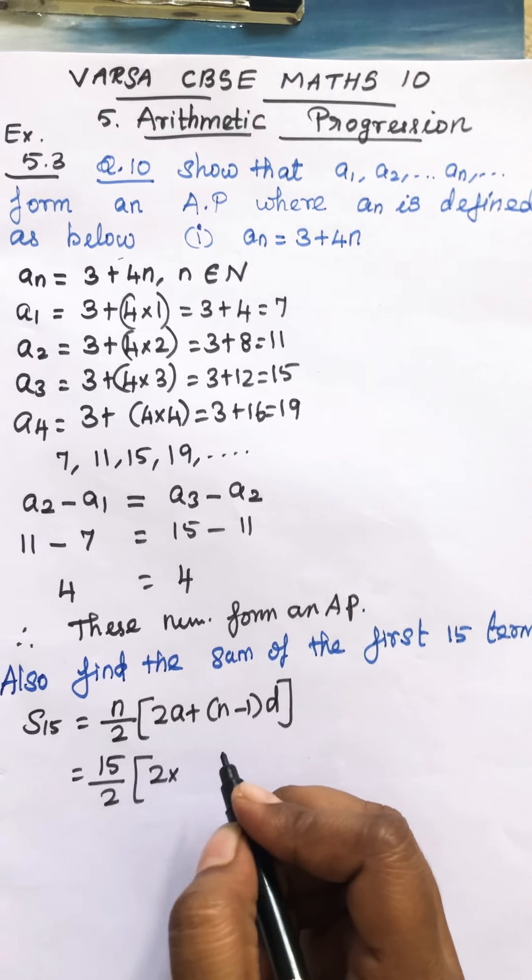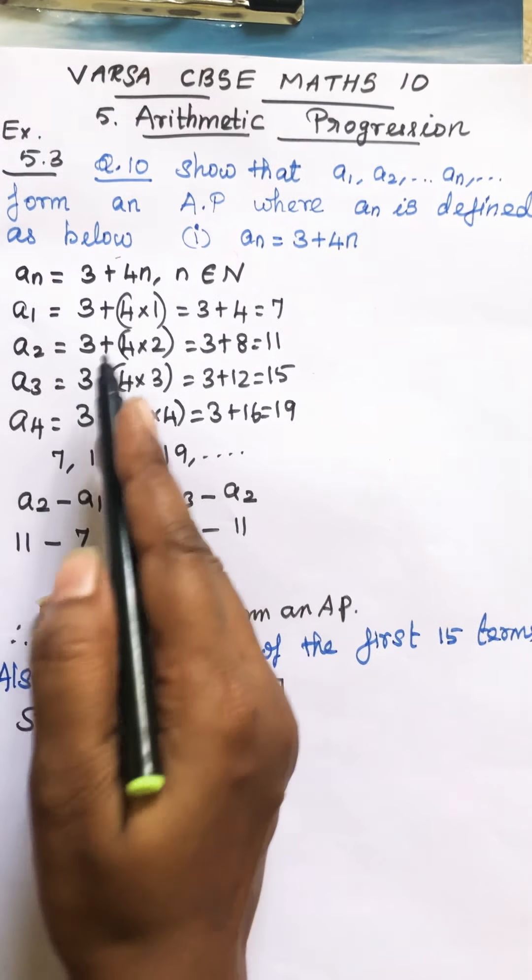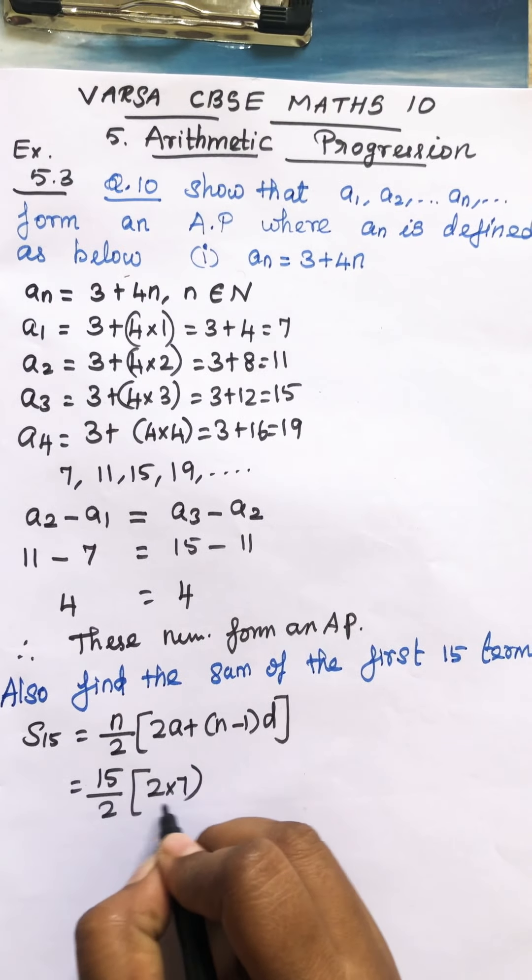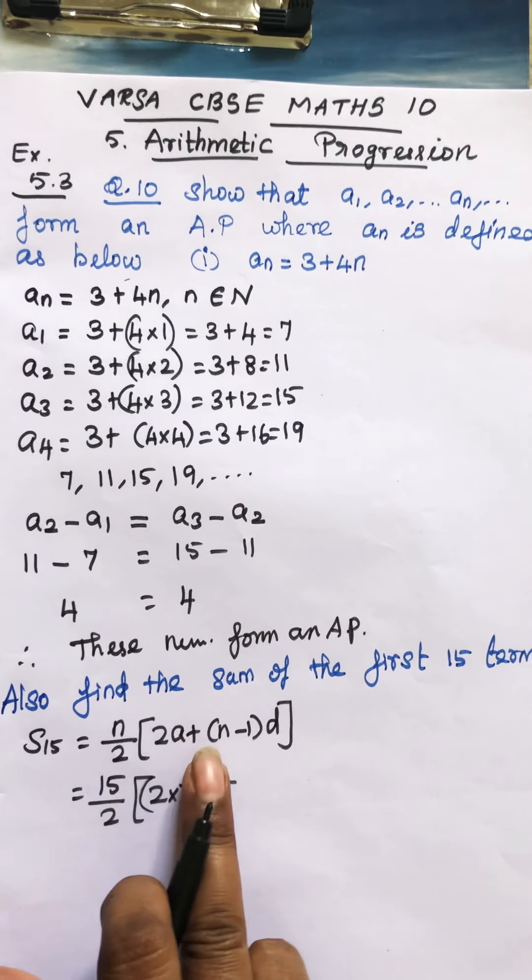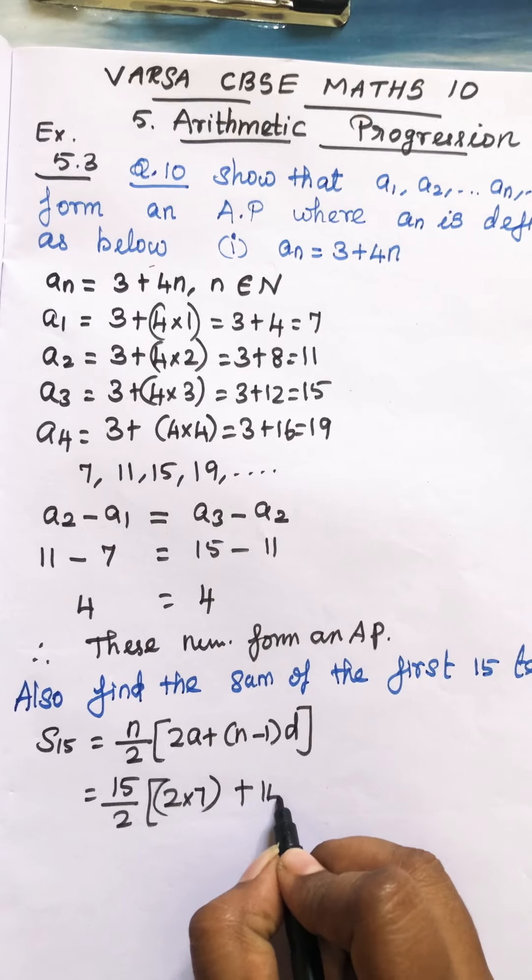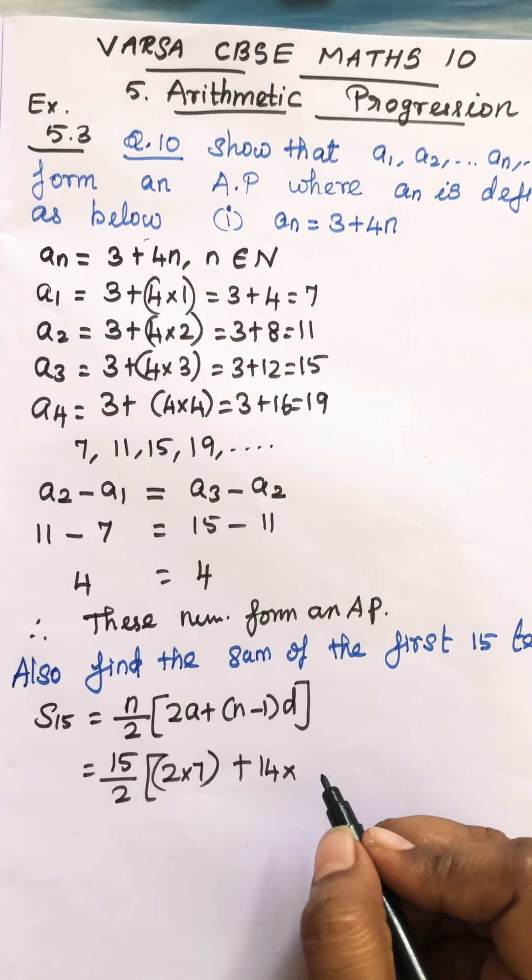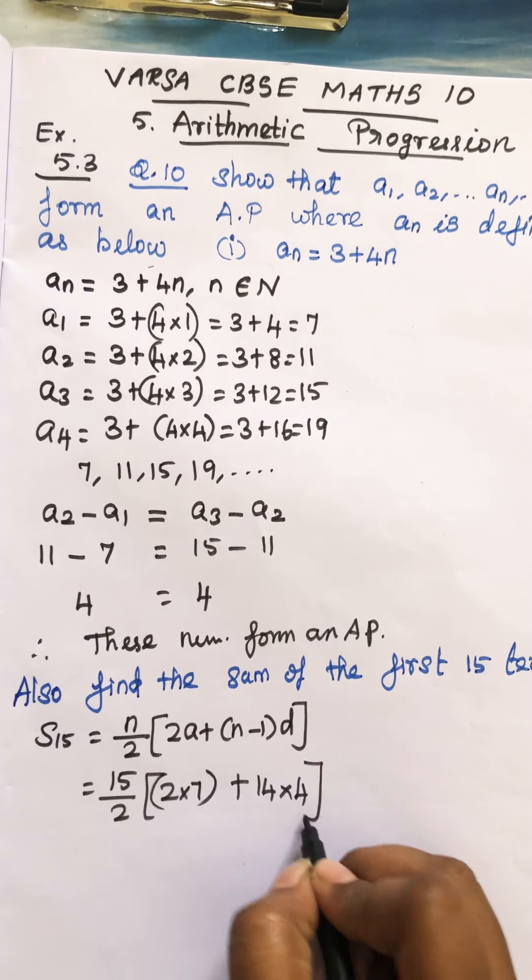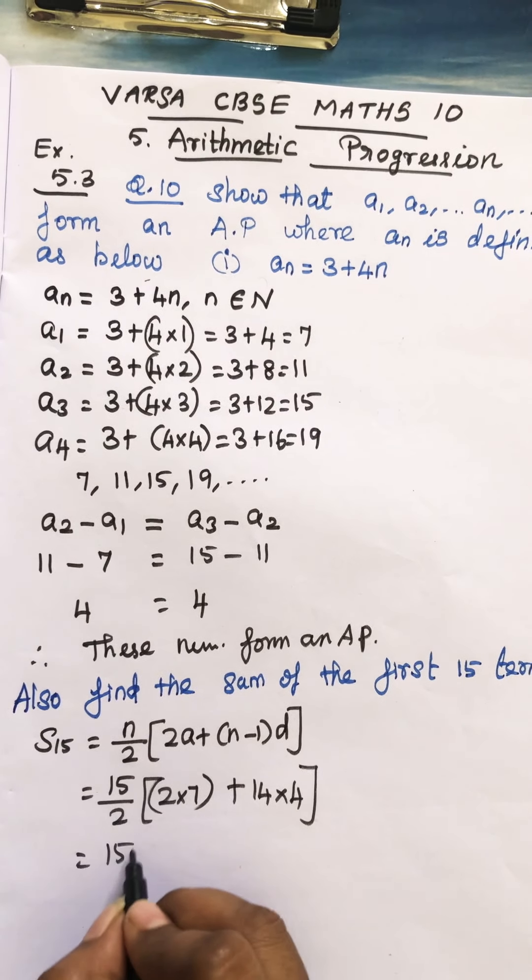Here they want to find 15 terms. So we take it as 15 by 2. So 2 into a. What's your first number? First number is 7. Plus n is 15. So 15 minus 1, that is 14 into d. What is your d? d is 4.